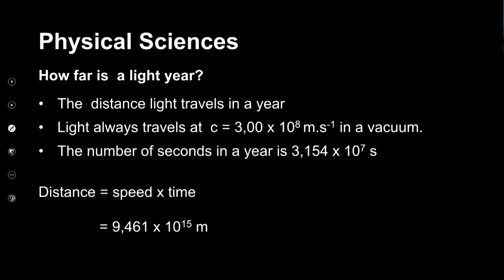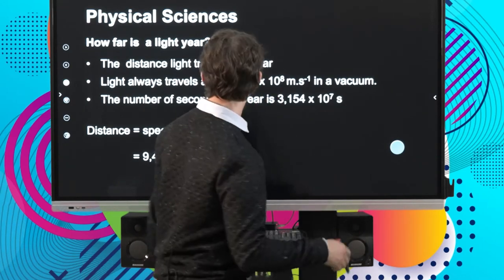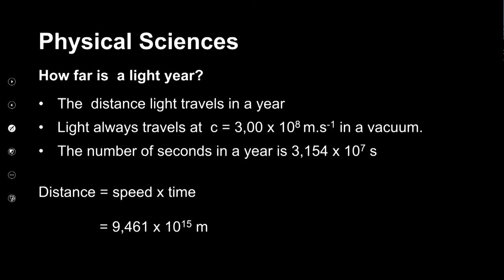Can we do the calculation for how far a light year is? Absolutely. We already know that light travels at 3 × 10⁸ meters per second in a vacuum, and there are 3.154 × 10⁷ seconds in a single year. Using the formula distance equals speed multiplied by time, when we multiply the speed of light by the number of seconds in a year we get that the distance of a single light year is 9.461 × 10¹⁵ meters — a truly colossal distance, far longer than the distance between our earth and the sun.